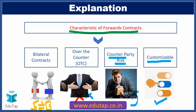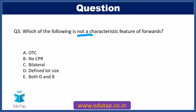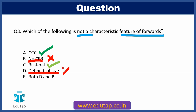So that was a brief explanation of the characteristics of forward contracts. Moving back to question three: the question asks which is NOT a characteristic of forwards. Option A (OTC) — yes, this is a feature. Option B (No CPR) — wrong, because counterparty risk does exist, so this is NOT a characteristic. Option C (Bilateral) — correct, forwards happen between two parties only. Option D (Defined lot size) — wrong, because forwards are highly customizable so you can define your own lot size. Therefore B and D are not characteristics of forwards — these are mentioned in Option E, which is the correct answer.